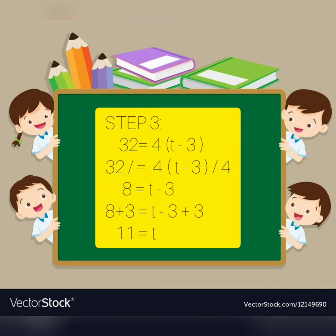Adding 3 to both sides, the remaining equation is 8 plus 3 equals t. We add 8 plus 3, and the result is 11. Therefore, the age of Tom is 11.